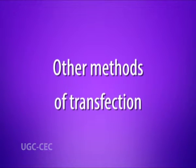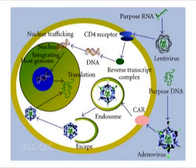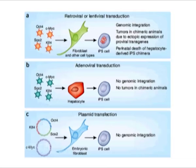Other methods of transfection: DNA can also be introduced into cells using viruses as a carrier. In such cases, the technique is called viral transduction and the cells are said to be transduced. Virus-mediated gene delivery utilizes the ability of a virus to inject its DNA inside a host cell. A gene intended for delivery is packaged into a replication-deficient viral particle. Viruses used for this purpose include retrovirus, adenovirus, adeno-associated virus, and herpes simplex virus.